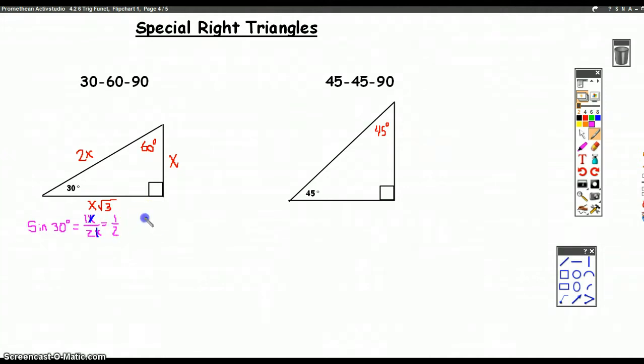Okay, let's do another one. How about the cosine of 30 degrees? Well, the cosine of 30 degrees is equal to the adjacent side divided by the hypotenuse, so it's X root 3, or X times root 3, divided by 2X.